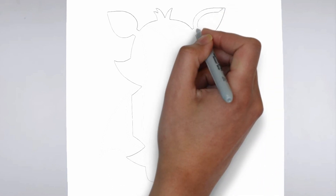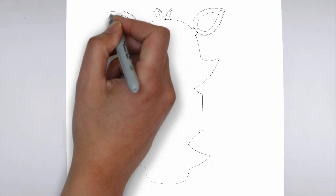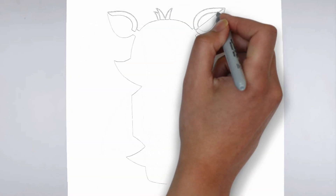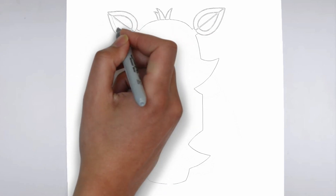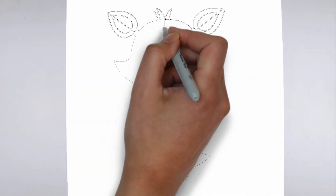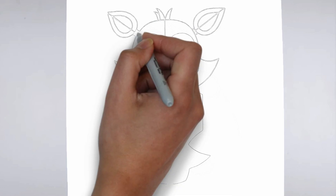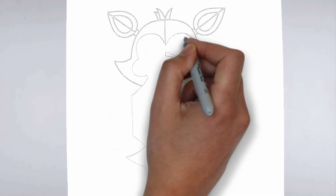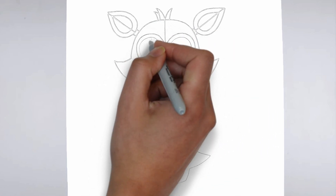First, we'll begin by sketching the basic shape of our subject. Make light, loose strokes to establish the overall form and proportion. Don't worry about details at this stage, just focus on getting the basic shape right.